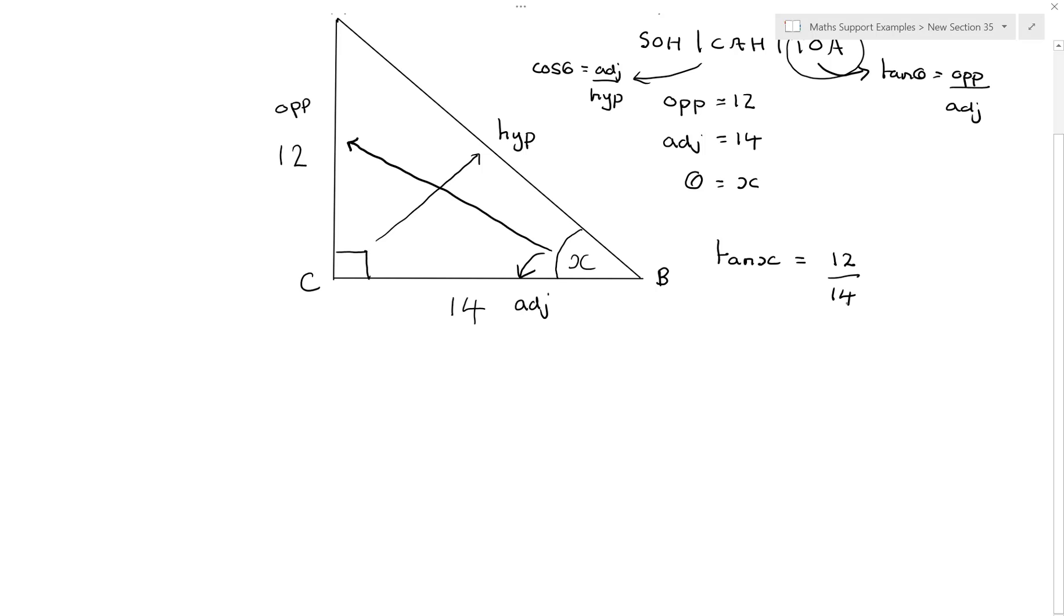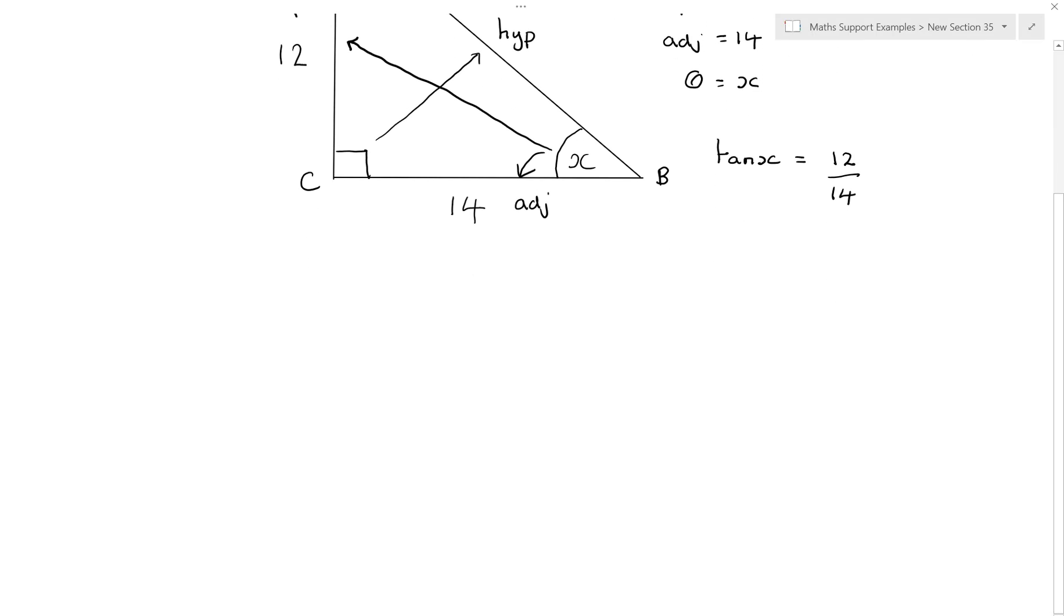Now when we're trying to find the angle, we have to use the inverse trig function. So we know that tan x equals 12 over 14. So we can say x is inverse tan, which we write as tan to the minus 1, of 12 over 14.